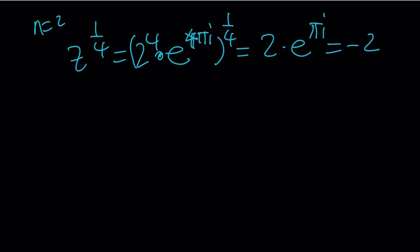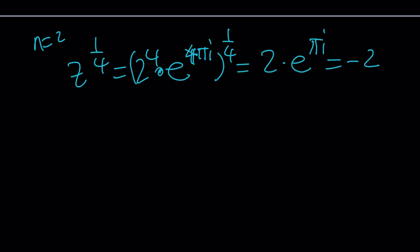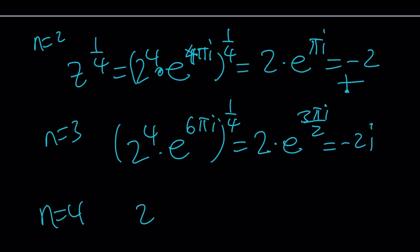And if n is equal to 3, then you're going to get 2 to the fourth times e to the power 6 pi i. And you're going to raise it to the power 1 fourth. That's going to be 2 times e to the power 3 pi i over 2. Now think about 3 pi over 2. That's going to be here. And that represents negative 2i. And finally, when n equals 4, you're going to get 2 to the fourth e to the power 8 pi i. And that to the power 1 fourth. That's going to give you 2 times e to the power 2 pi i, which brings you back to 1. And that's going to be a 2.